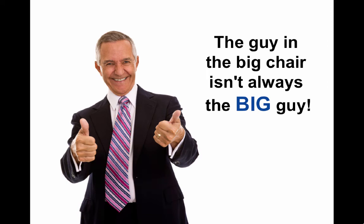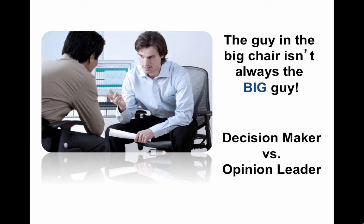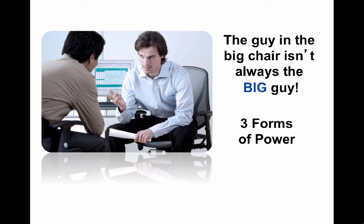Remember that the guy in the big chair isn't always the big guy. Sometimes there are other people who are key in an organization to getting things done. There is the person who has the ability to sign off on a budget or decisions — whereas somebody that's an opinion leader can actually make change happen. Think of these three forms of power. First, authority power — that's signature power. Next, personal power — this is where you have people that have a lot of charisma. And then there's referent power.